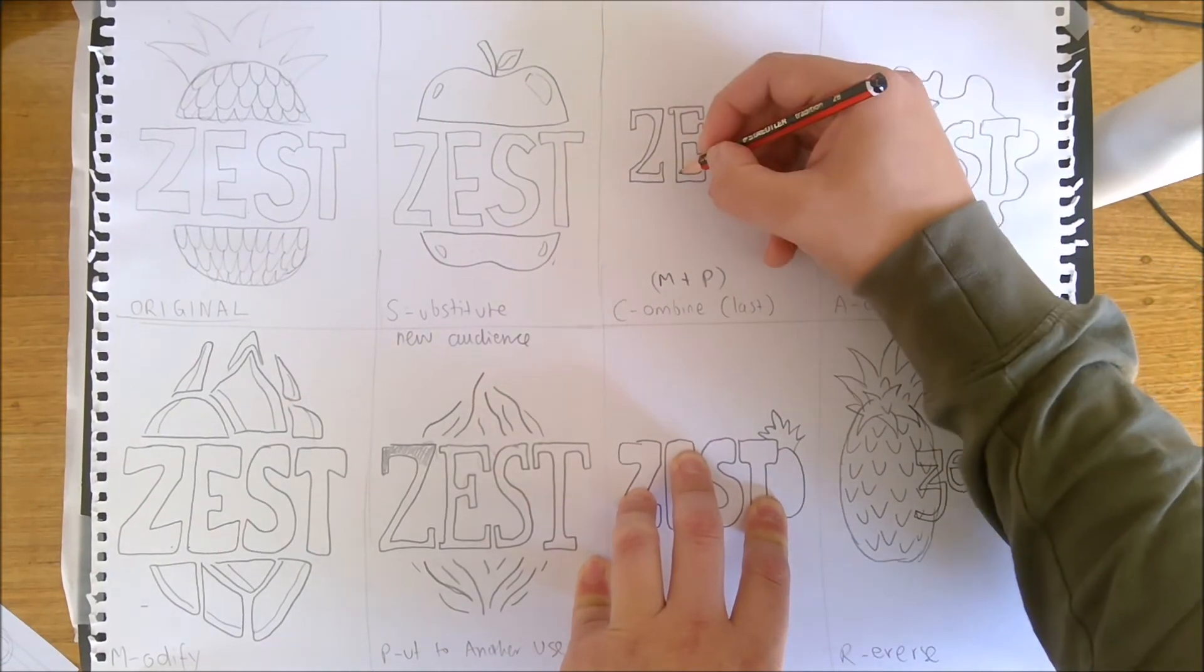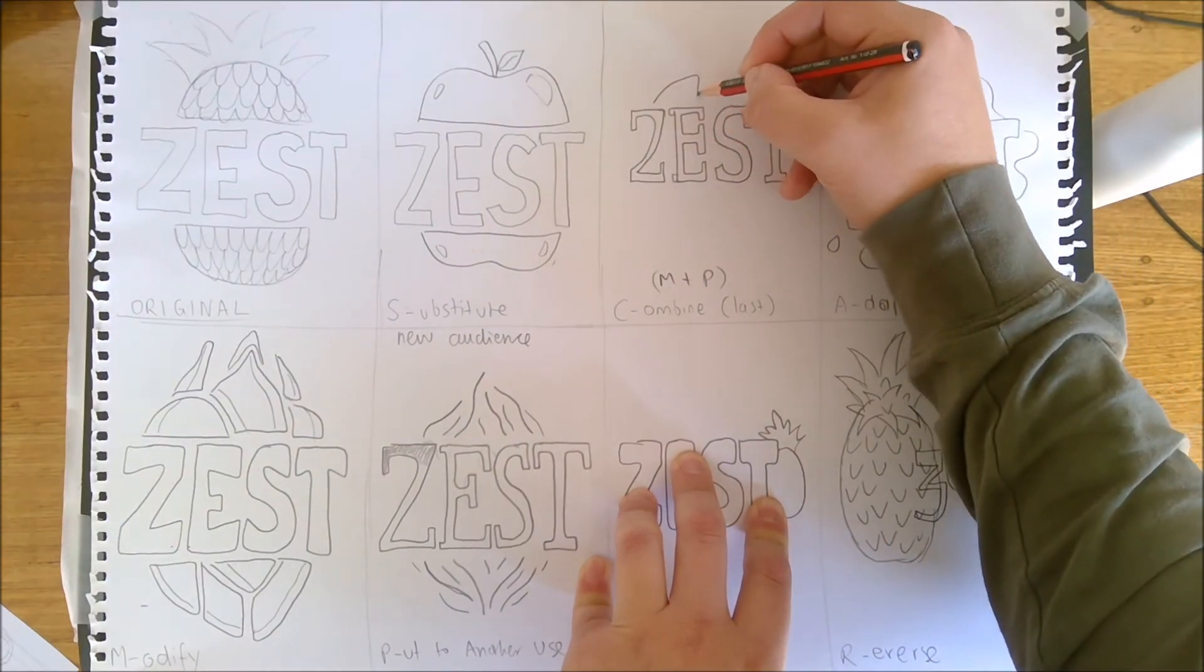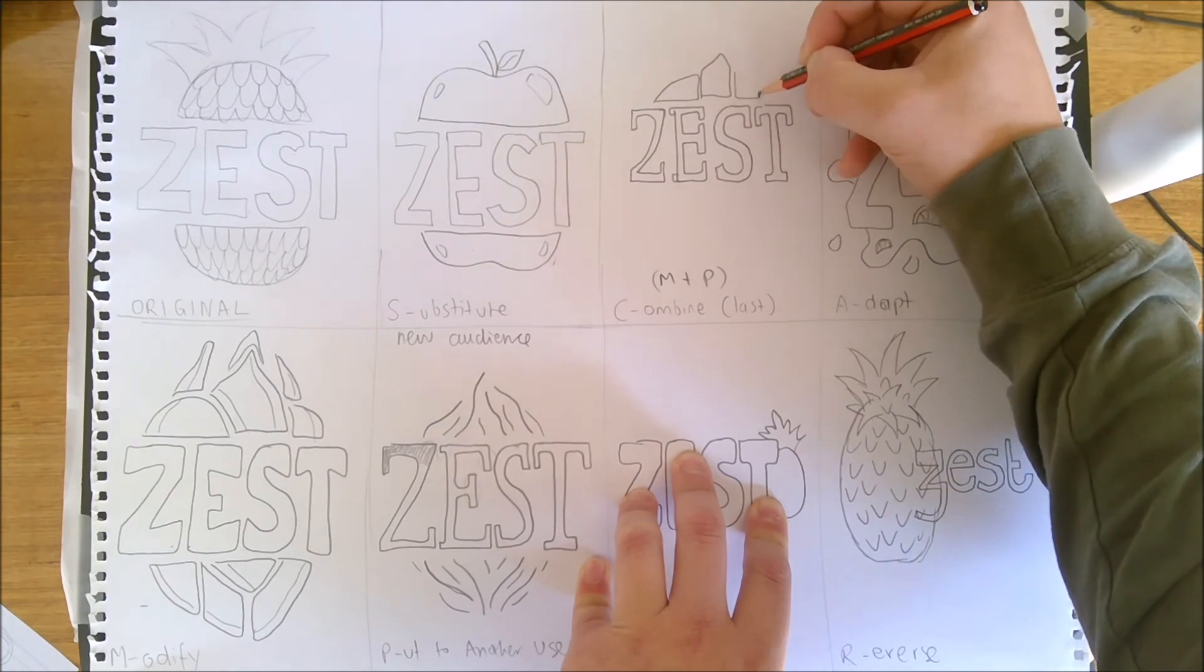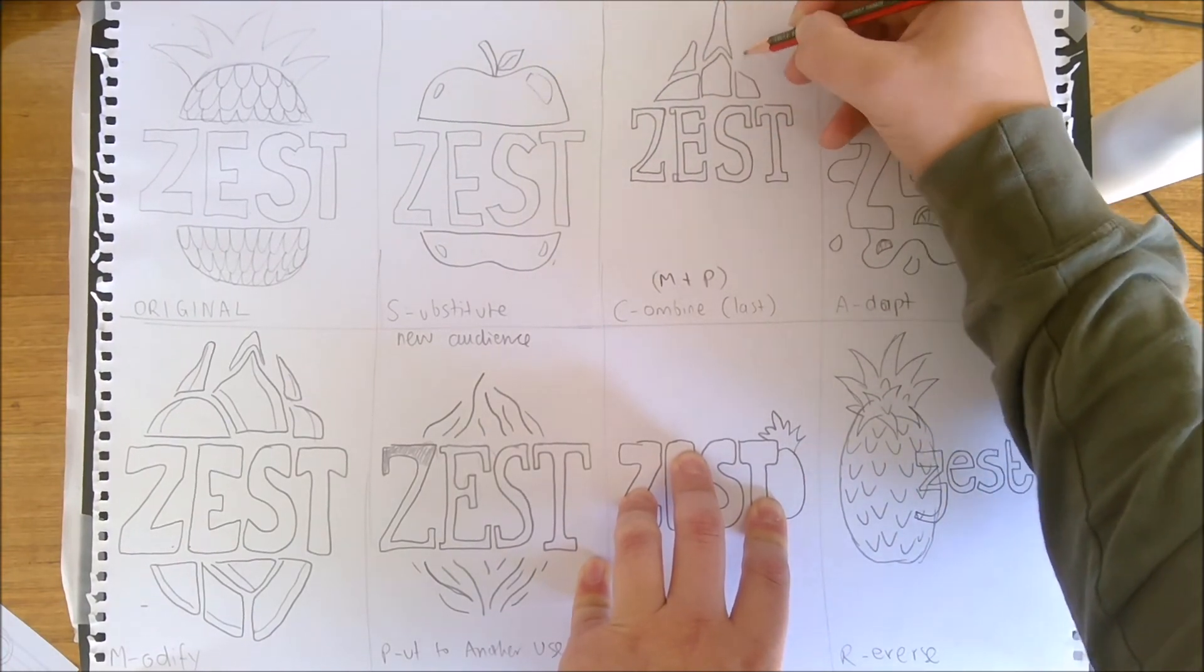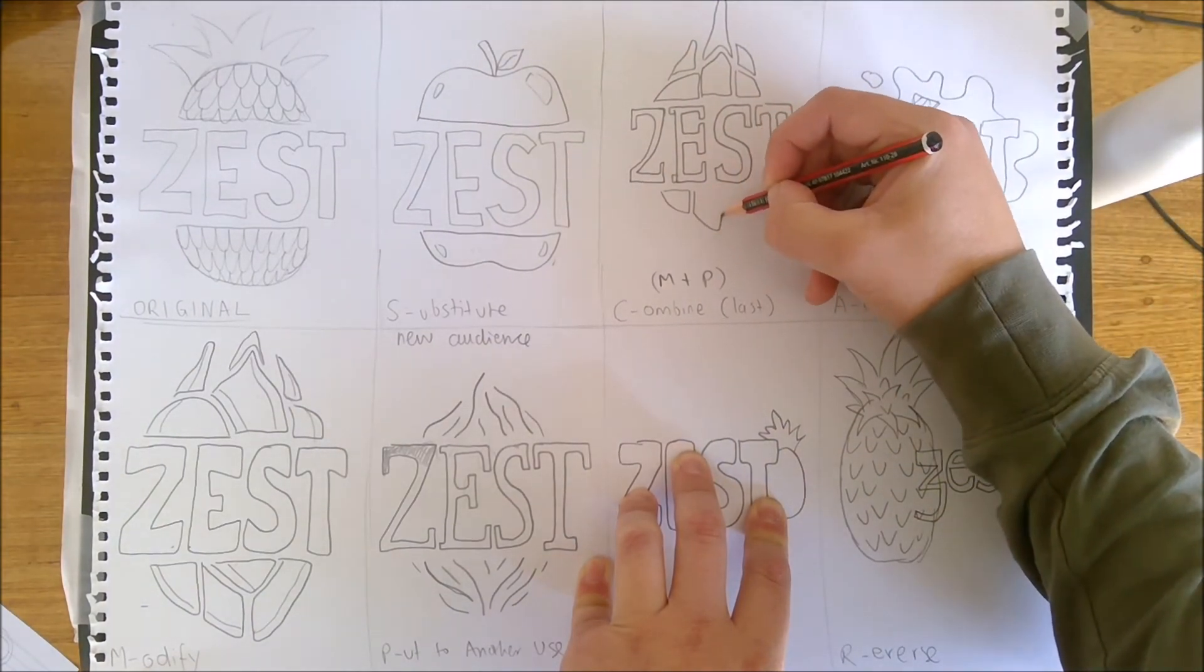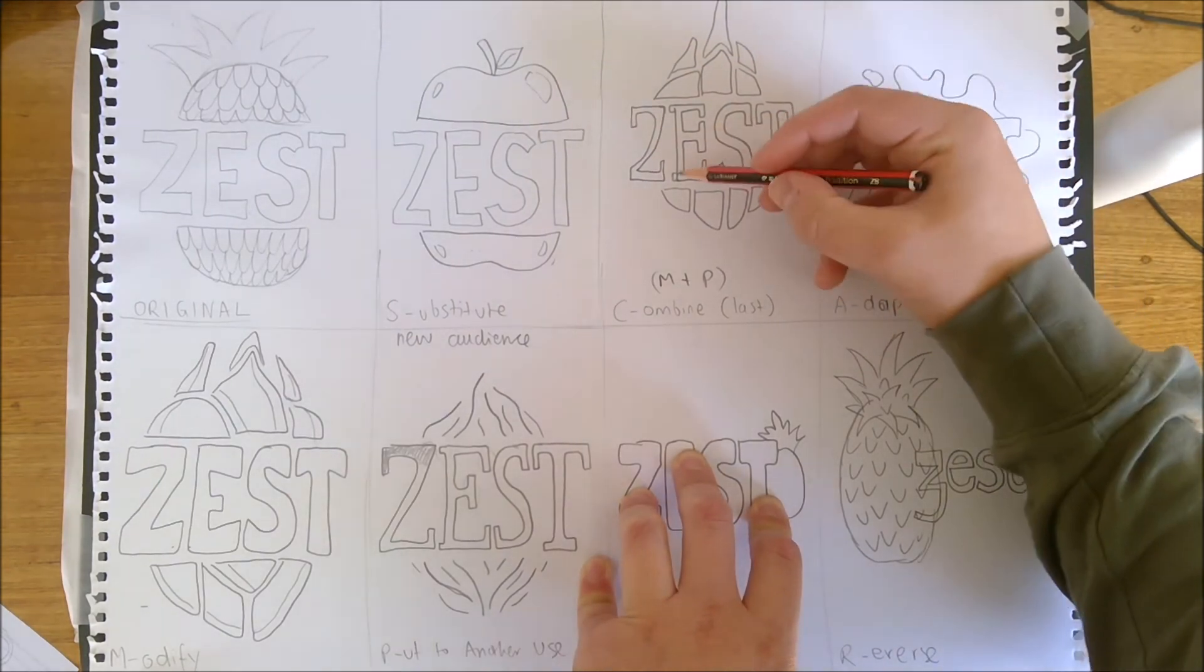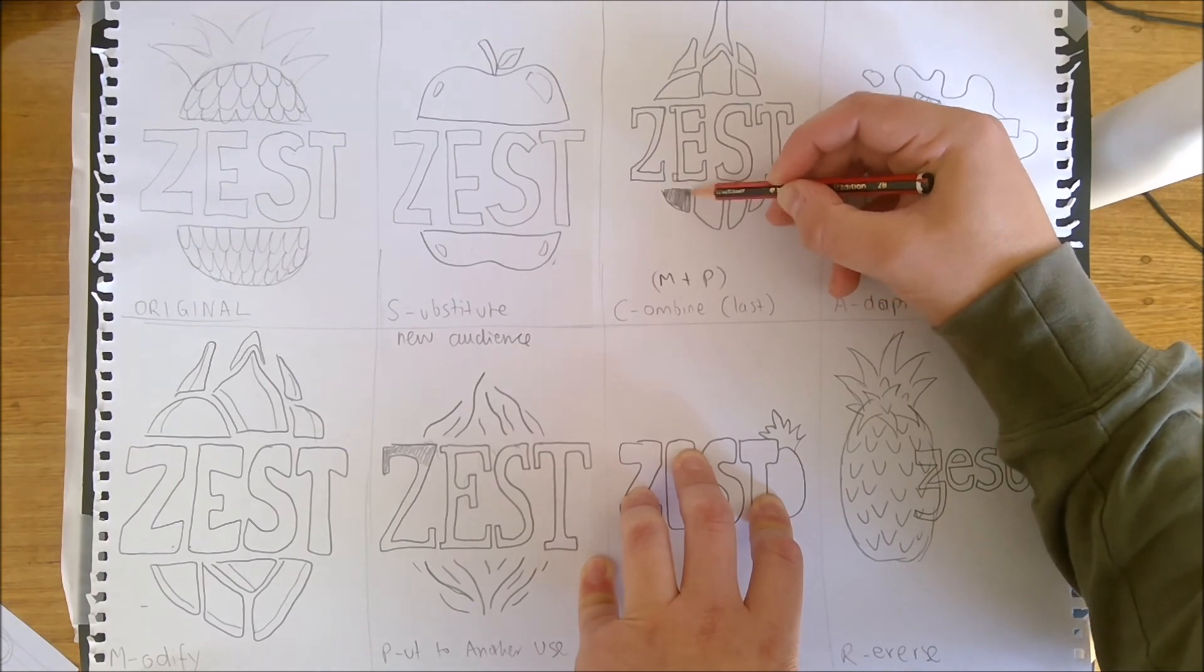I can always go back and edit if I need to add certain things. And then using some of the stuff from modify, I'm going to really clearly try and create this dragon fruit effect using just basic shapes.